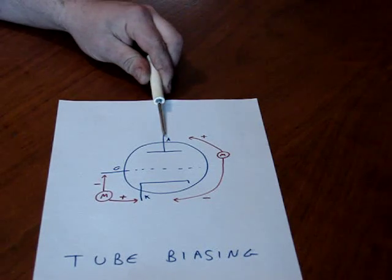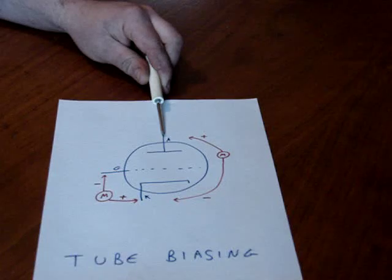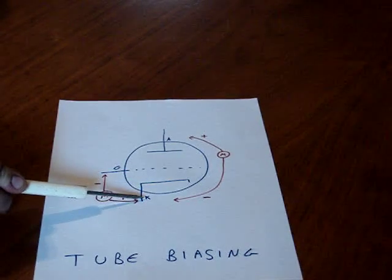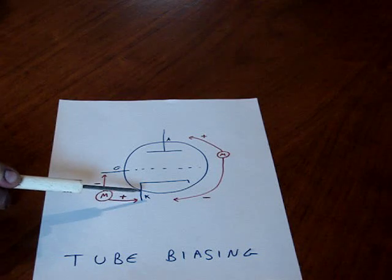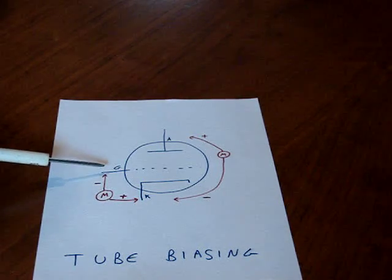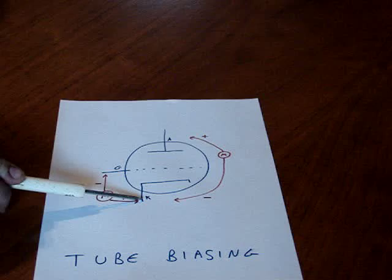So the plate or anode of the tube is always positive in reference to ground. The cathode is always the negative terminal. The grid, the control grid, like I said earlier, it's like pinching shut a garden hose. That needs to be more negative than the cathode.